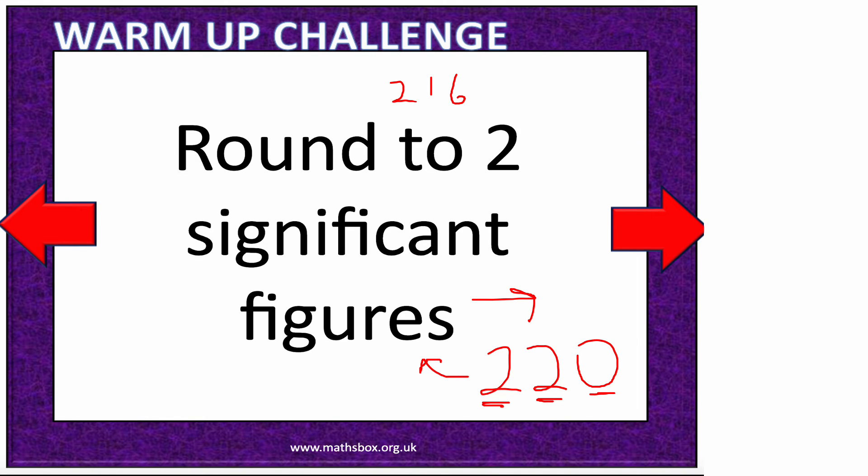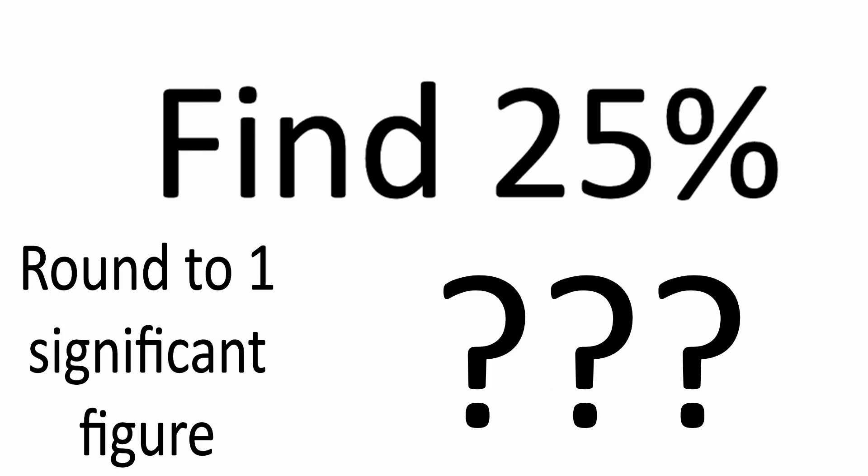I'm now going to work out 25% of 220. That's the same as dividing it by 4. So half of it is 110, half it again, I get 55. Round 55 to one significant figure—your answer is 60. So the final answer is 60.